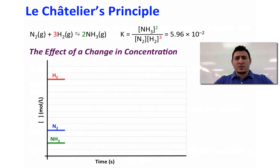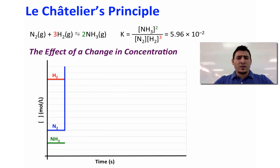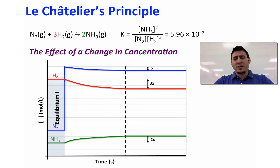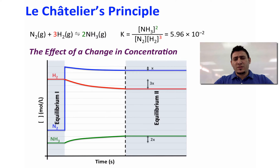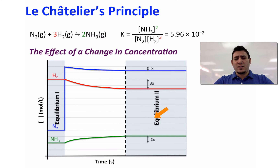So how can we represent this on a concentration profile? The equilibrium position number 1 concentrations are listed on the graph. When we add 1 mole of nitrogen gas to the system, the system will readjust to reach equilibrium again by decreasing the concentration of N2, decreasing the concentration of H2, and increasing the concentration of NH3. Notice that stoichiometry is respected: when x moles of N2 react, 3x of H2 will react, and 2x of NH3 will be produced.